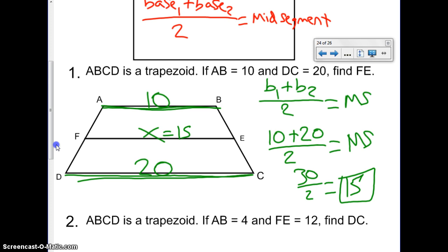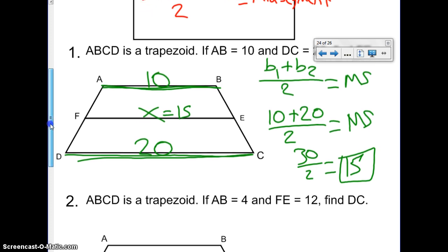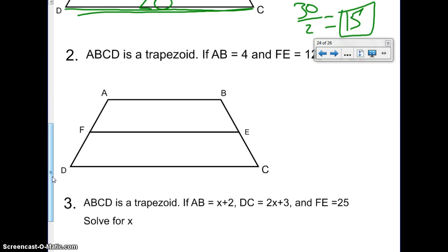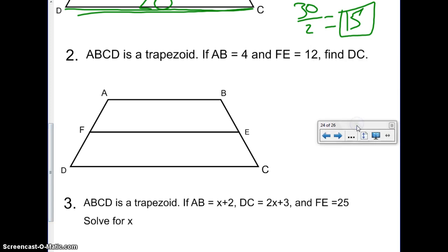Well, that was easy, Mr. Elizondo. Let's look at maybe a harder one. Number 2 says, oh, it's trapezoid ABCD again. It says if AB is 4 and FE is 12, we have to find DC. Well, let's label our bases again.